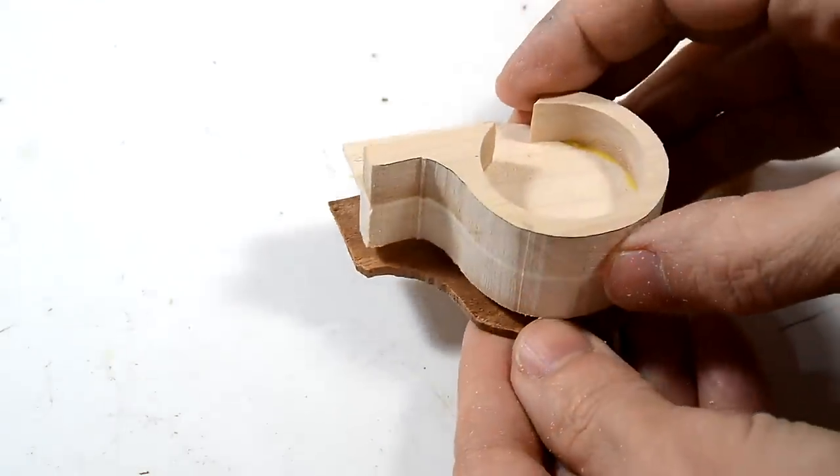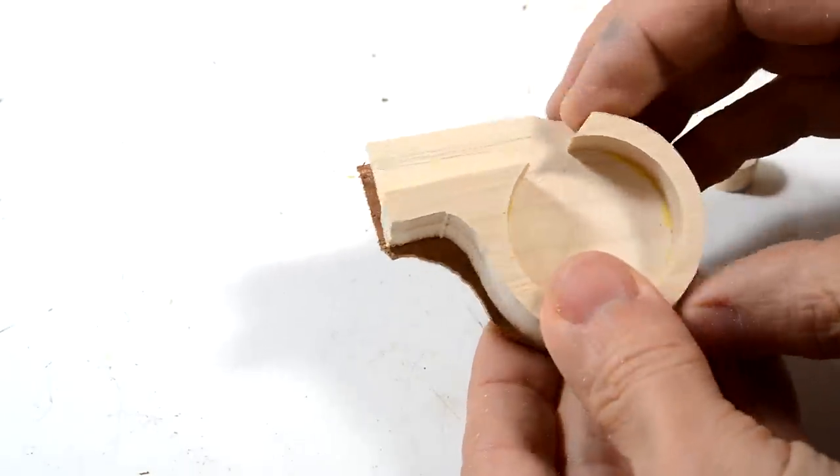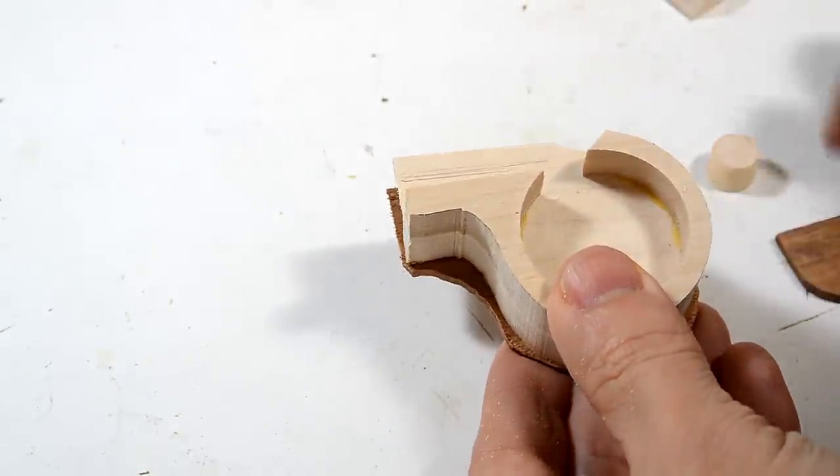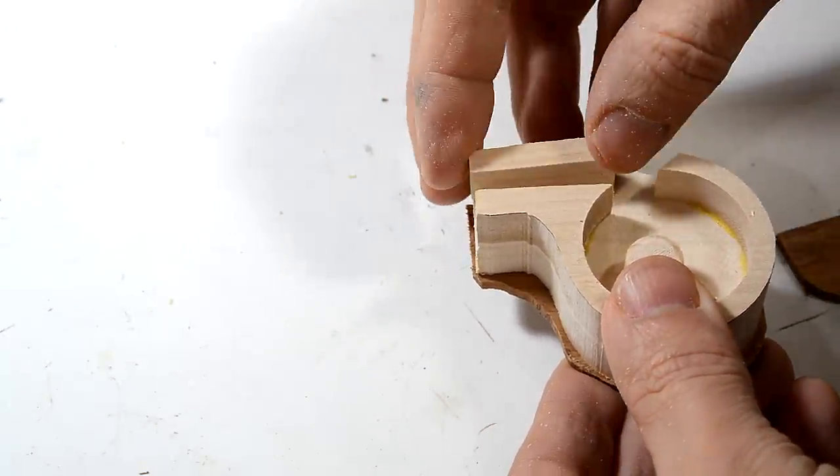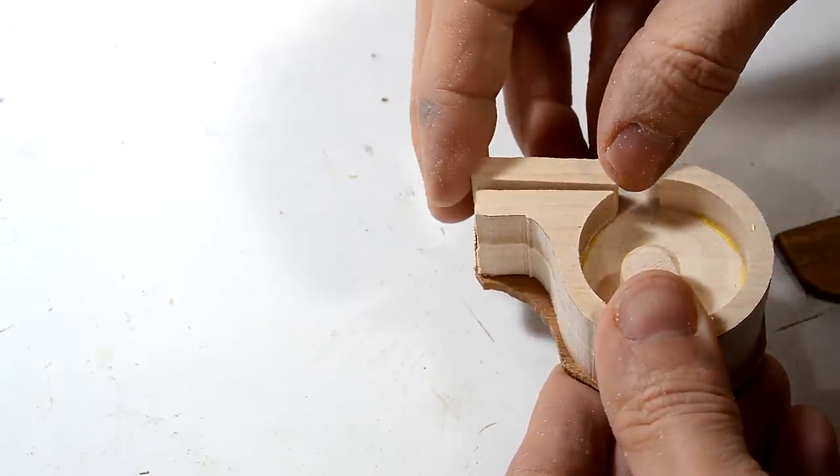I cut the mahogany sides a little bit over size so that I don't have to be that precise about it. And now I can clamp this together for a final fit before I try to glue things.